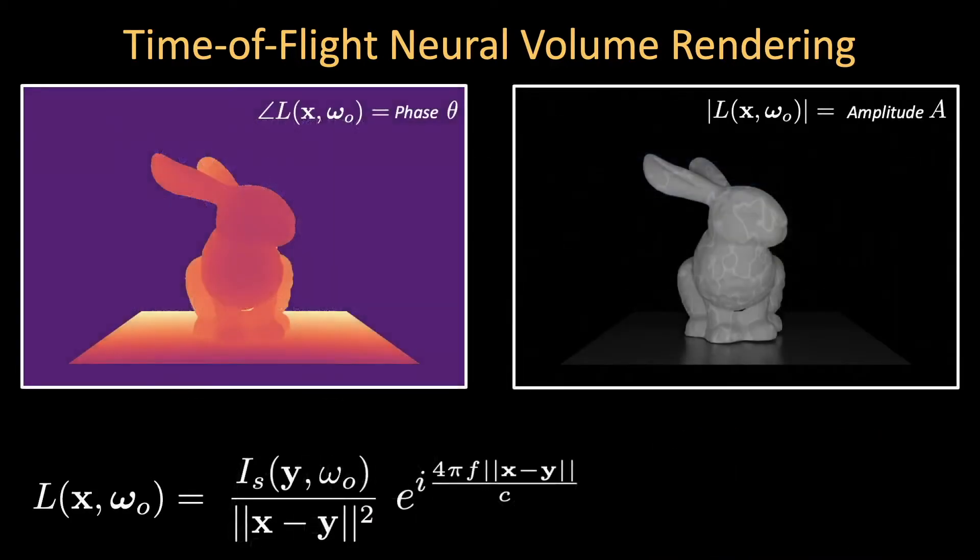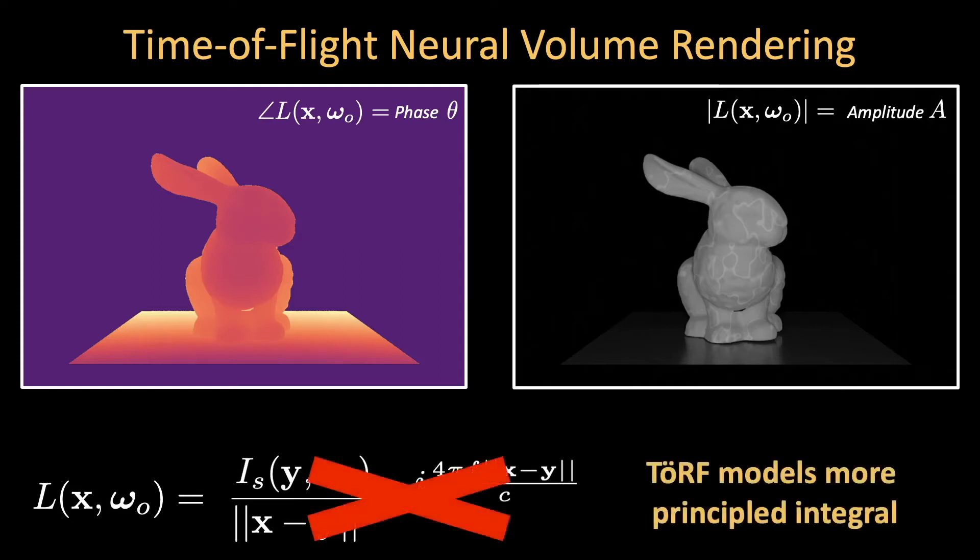Most methods that work with time-of-flight cameras, however, do not explicitly model the summation or integration. Instead, they assume that the camera measures the integrand in the previous equation at the first intersected surface only. In this case, for continuous wave time-of-flight cameras, the measured phase is proportional to depth and amplitude to reflectance. Instead, TERF explicitly models the integral to help overcome the errors in the depth that we saw earlier.